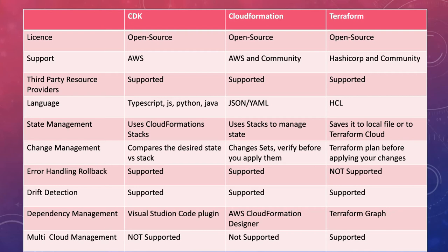Drift detection means the change of a resource over time. The change can come from within the tool itself or it can be done outside via another tool. If the resource has been modified externally, there is a drift between the resource stored in state management and the actual resource in the real world. CDK, CloudFormation and Terraform all have services to detect whether drift has occurred, allowing you to update your state files and re-apply accordingly.